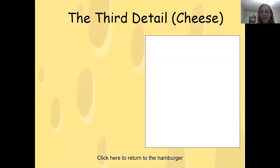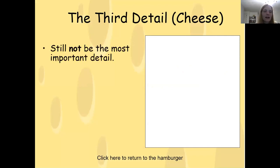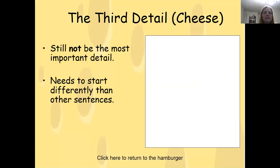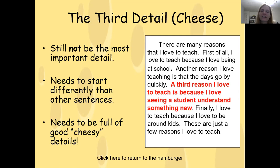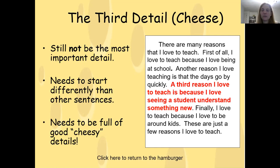The third one is the cheese — for those of you that like cheeseburgers. It's still not the most important detail, but it needs to start differently than the other sentences. If we keep using the same words, we're not growing our English, we're not expanding our English. It's very important to show variety, to show differences. So this needs to be full of cheesy details. For example: 'A third reason I love to teach is because I love seeing a student understand something new.' That starts differently than the previous two sentences, which said 'first of all' and 'another reason.' This keeps the reader interested.